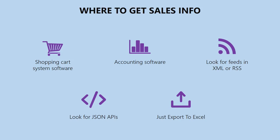Your accounting software should be able to tell you your sales growth and which products are doing the best. Alternatively, your shopping cart system software may have some of this information, but if you're selling both online and offline, it won't really give you a true picture. So your accounting software is the best way. How do we get that information from our accounting software into PowerPoint?